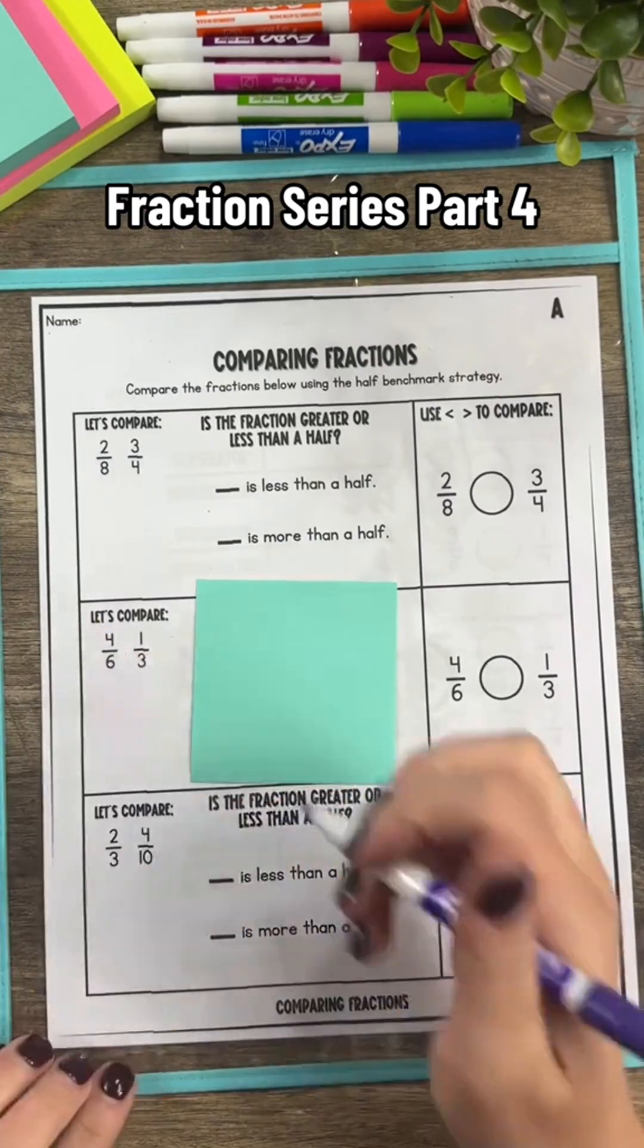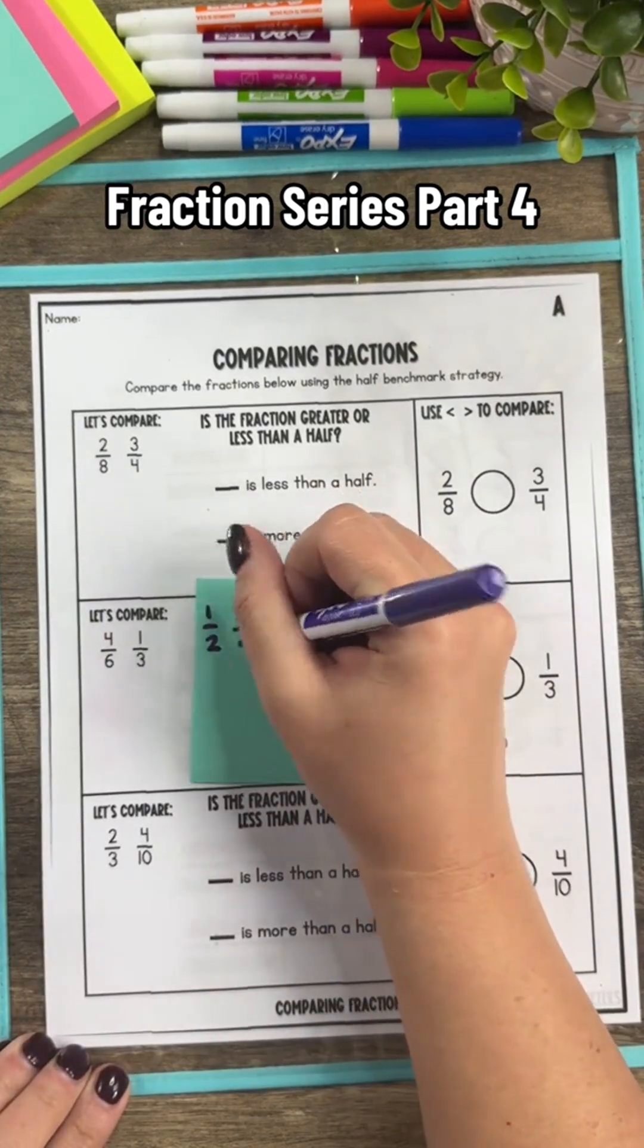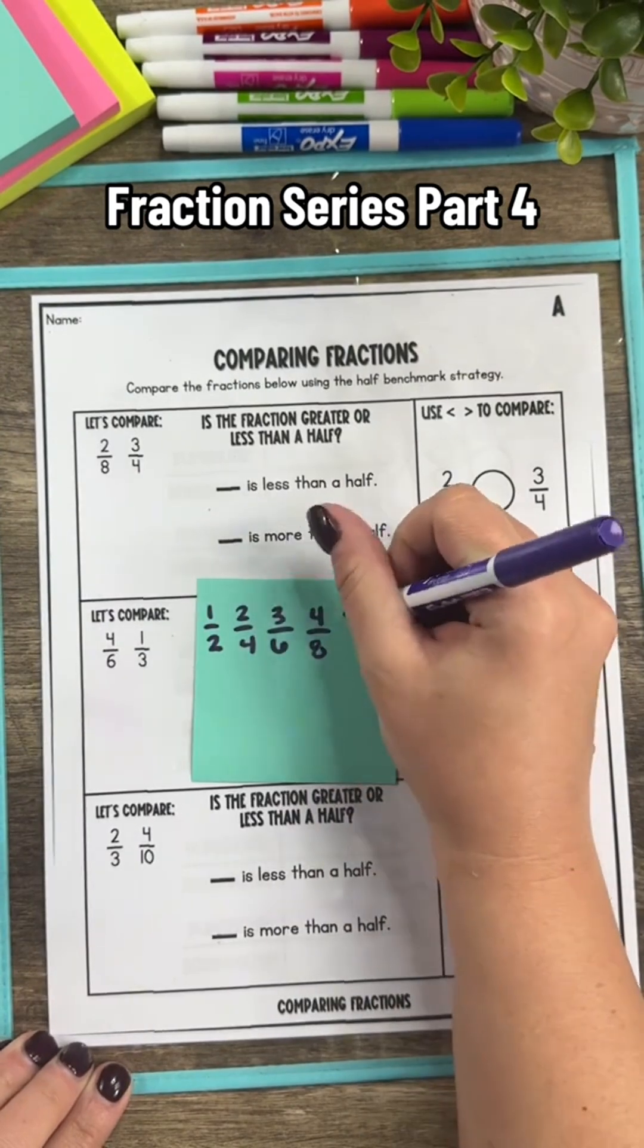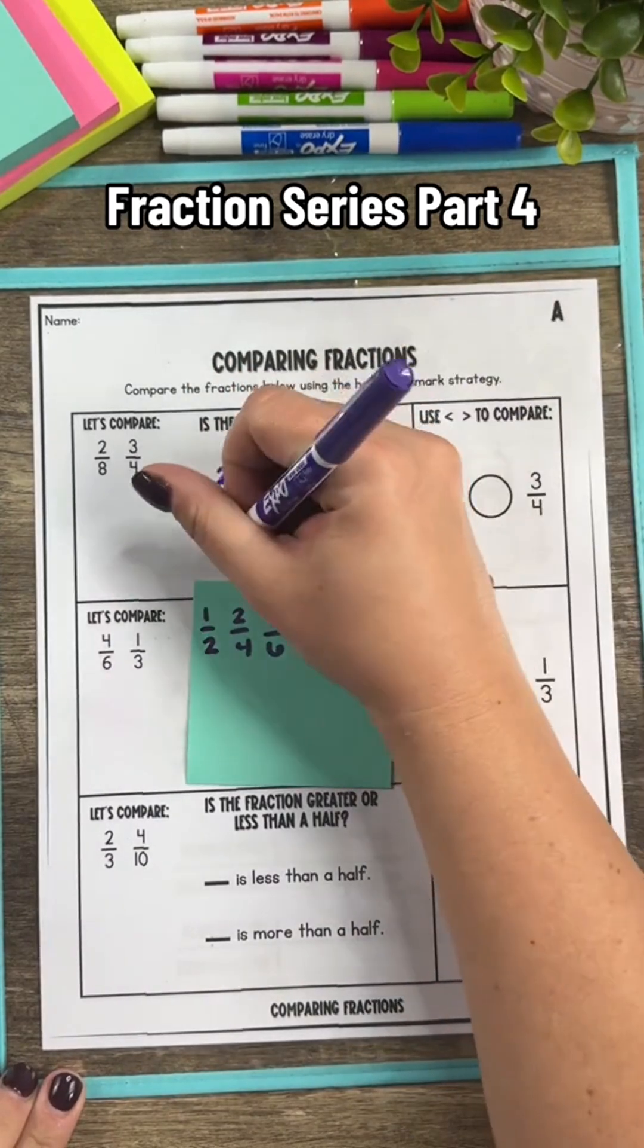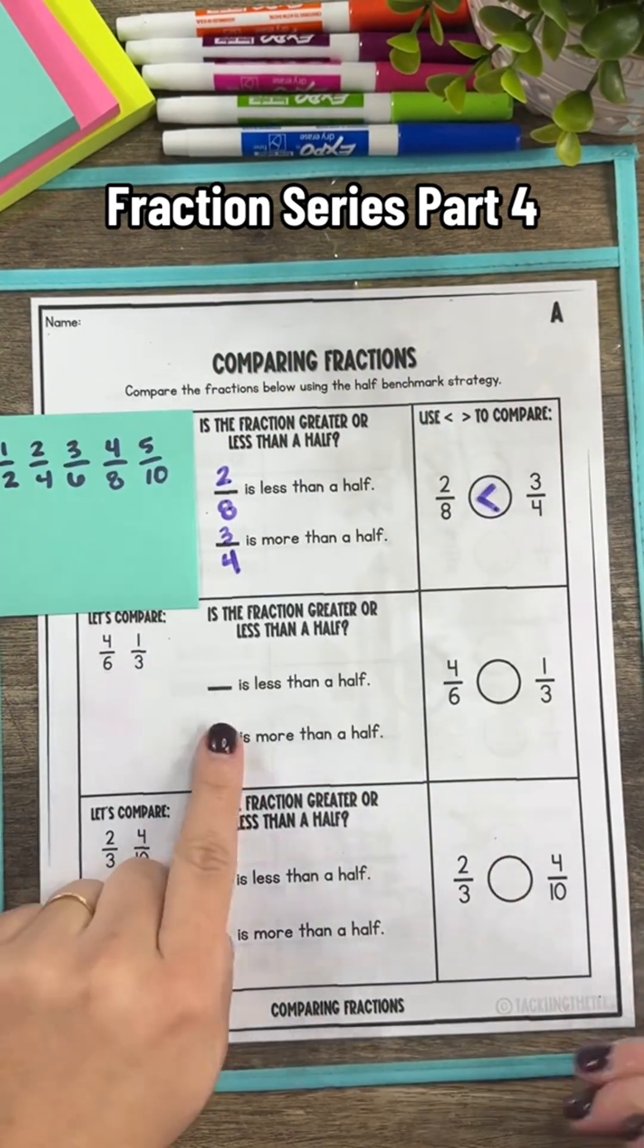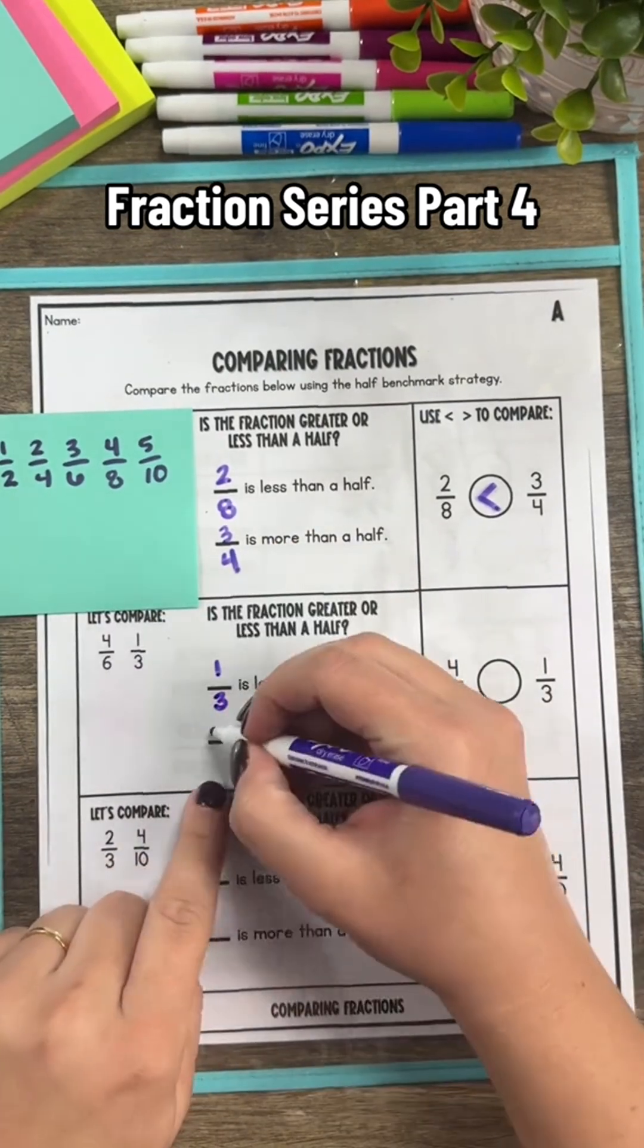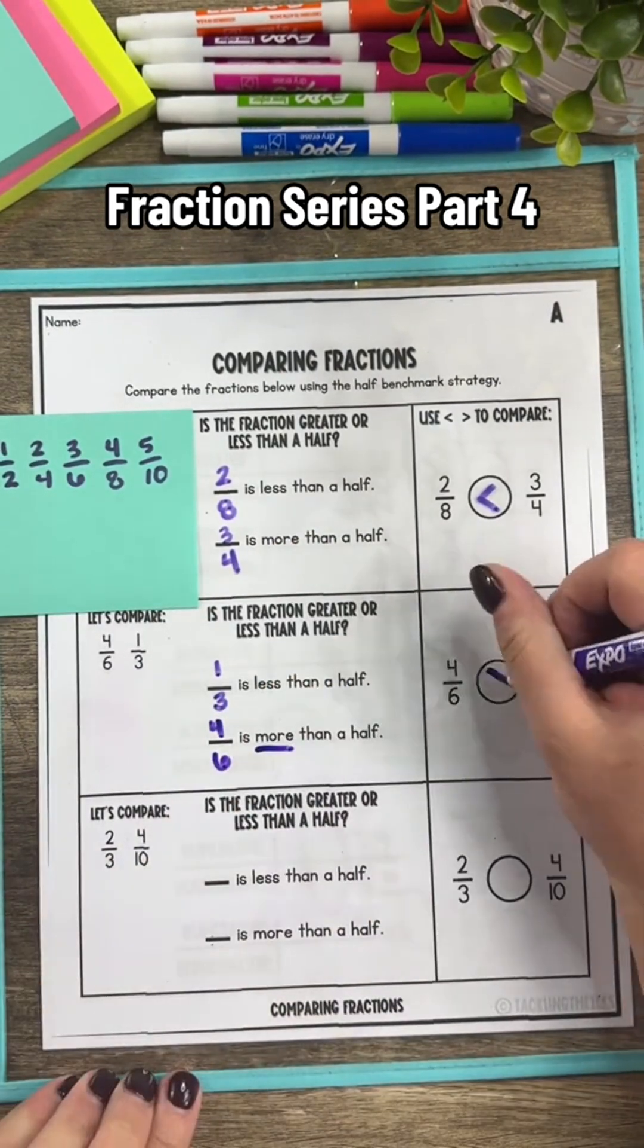Once they're comfortable with representing comparing fractions, then we can introduce some strategies. Let's start with a half benchmark. Depending on the two fractions that are given, sometimes using a halfway benchmark will automatically tell you which fraction is greater or less. So have your students remember those fractions that are equal to one-half.